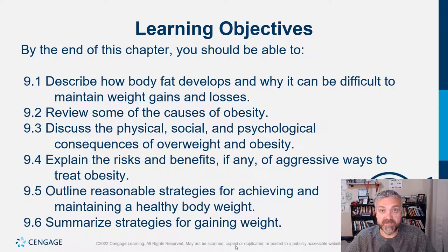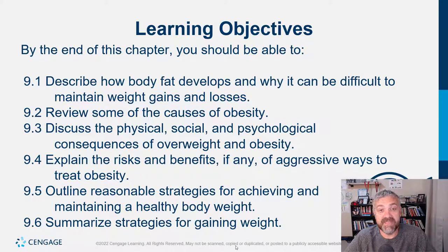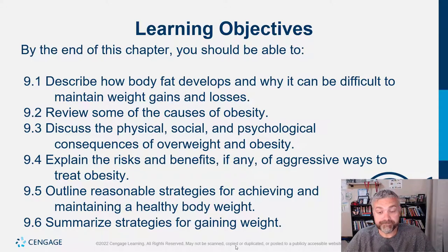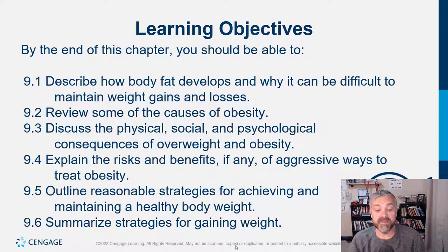We'll also talk about how when new body fat develops, there's a huge difference between fat cells getting bigger versus getting more fat cells. Other objectives include reviewing causes of obesity — energy in greater than energy out — and why those two sides of the scale become unbalanced. We'll discuss the physical, social, and psychological consequences of overweight and obesity, explain the risks and benefits of aggressive treatments like medication and surgery, outline reasonable strategies for achieving and maintaining a healthy body weight — which about 70% of Americans need — and summarize strategies for gaining weight for the less than 2% who are underweight.